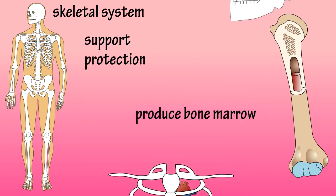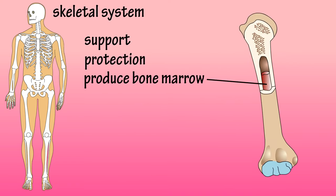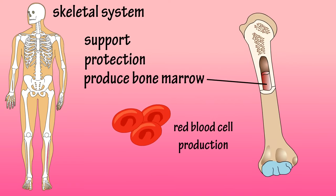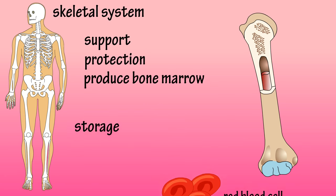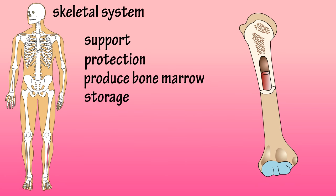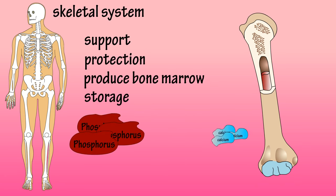Some bones contain red bone marrow that produces new red blood cells daily. Some bones also act as storage containers for minerals such as phosphate and calcium, which is important for muscle contraction.